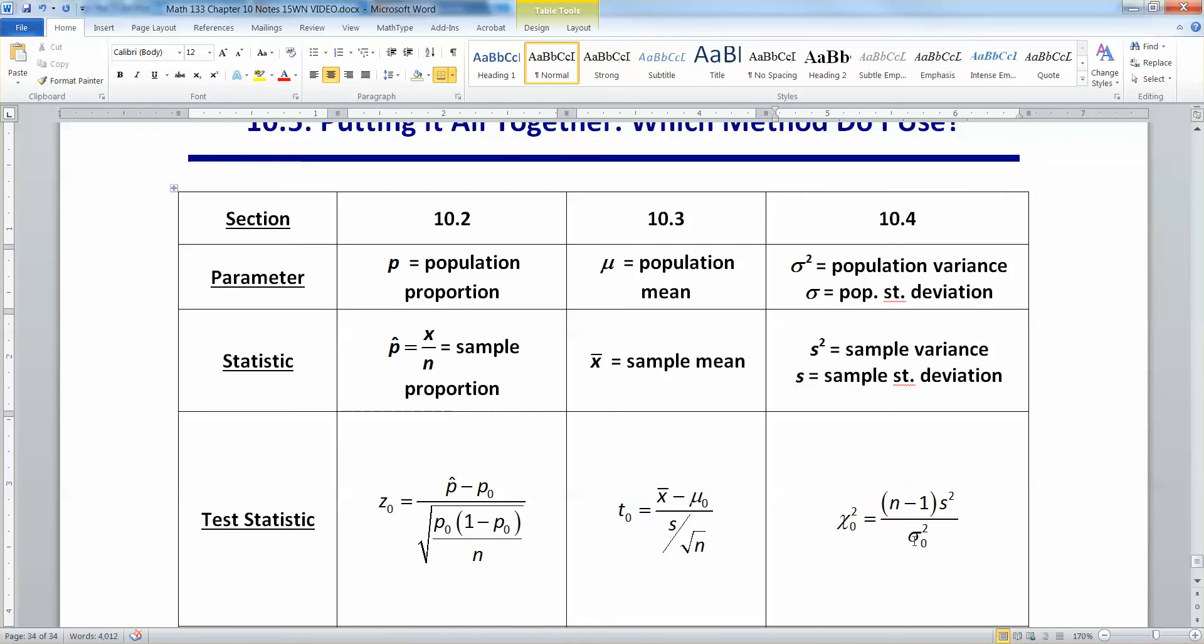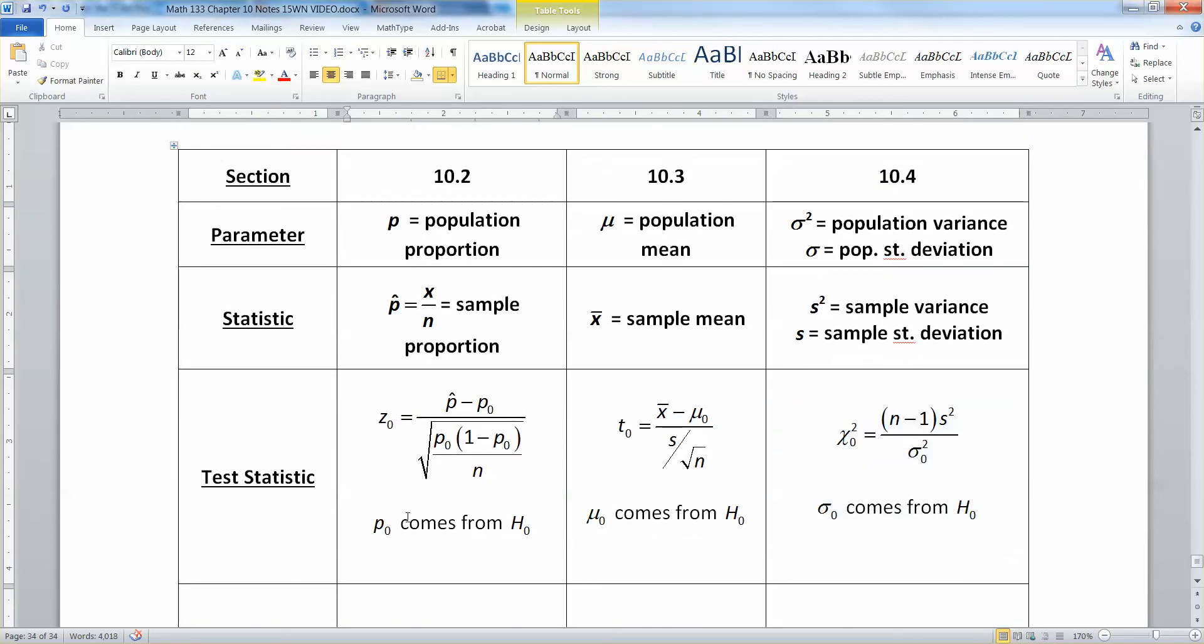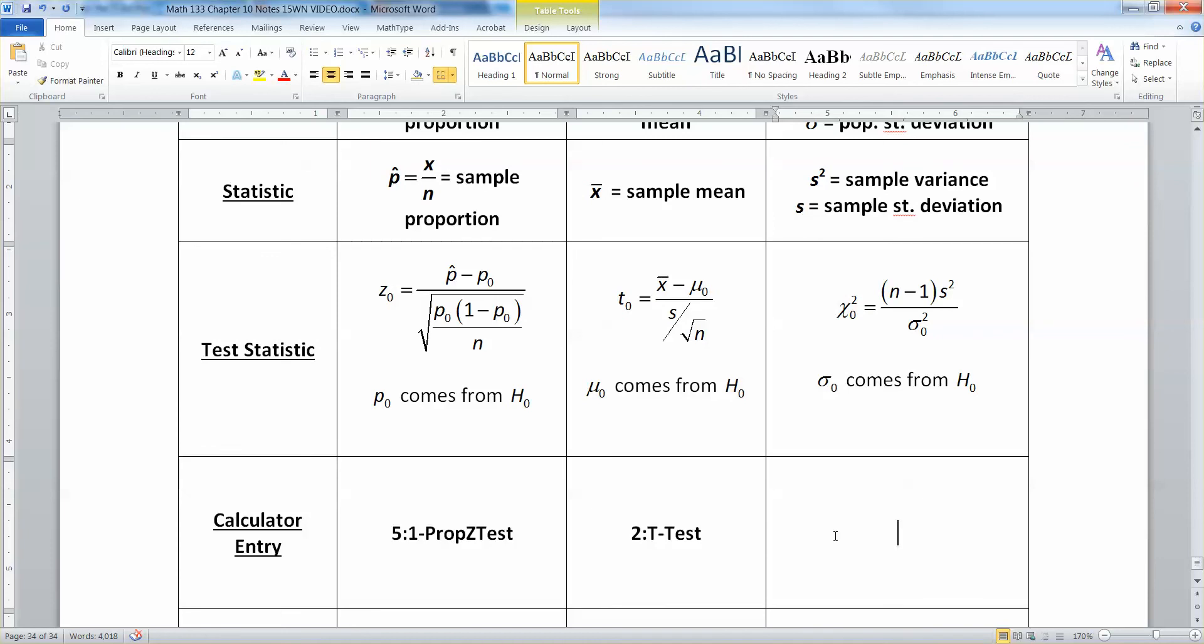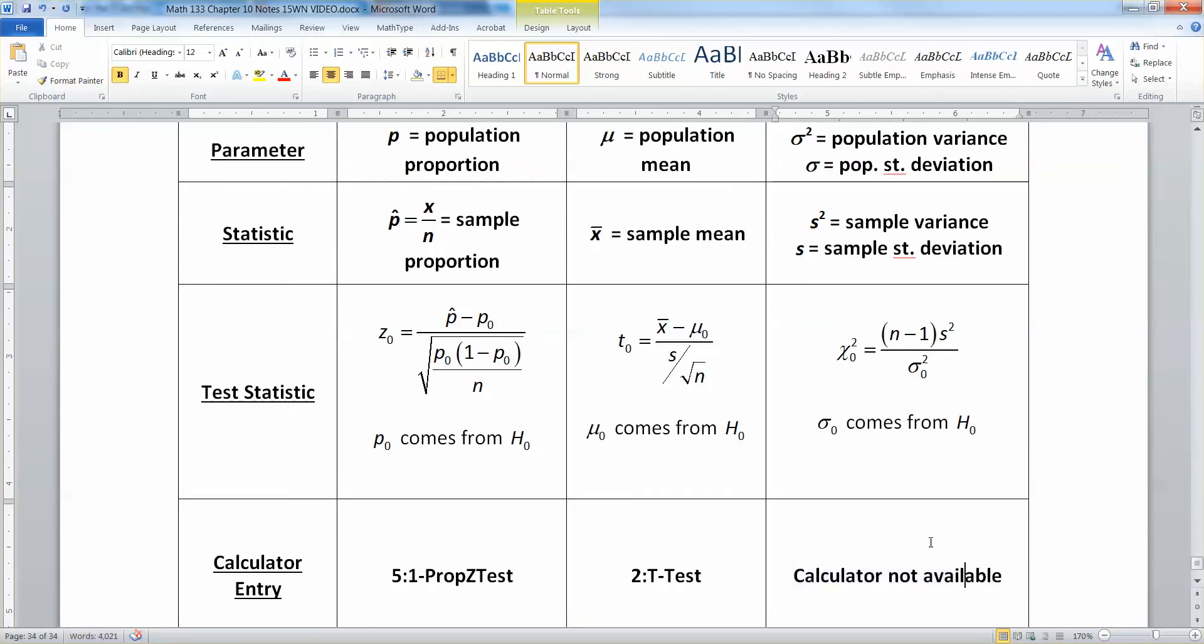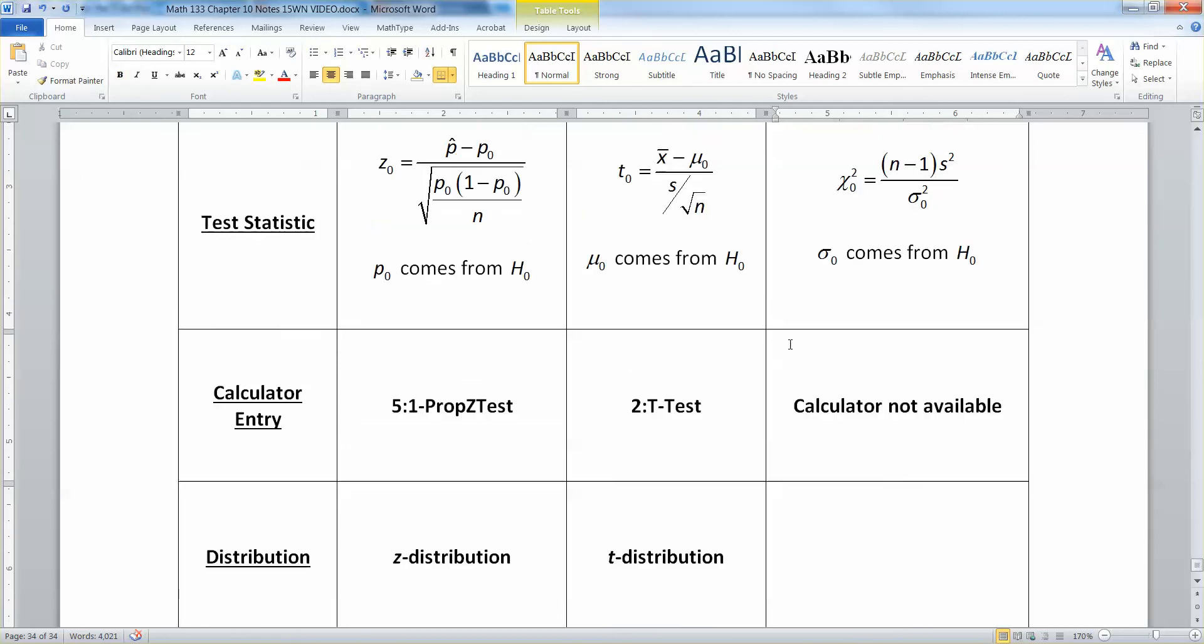And just like with the other ones, the one with the zero attached, that's the one you assume is true from the null hypothesis. So p0, μ0, χ²0, those are assumed to be true from the null hypothesis. There. I just added that into those notes right there. p0 comes from H0, the null hypothesis. μ0 comes from H0, the null hypothesis. And so does σ0, and therefore σ0², because all that is is taking the standard deviation and squaring it to come up with the variance. All right. Now, the calculator. There isn't one. So the calculator is not available on this one. All right. So you're stuck doing it all by hand.